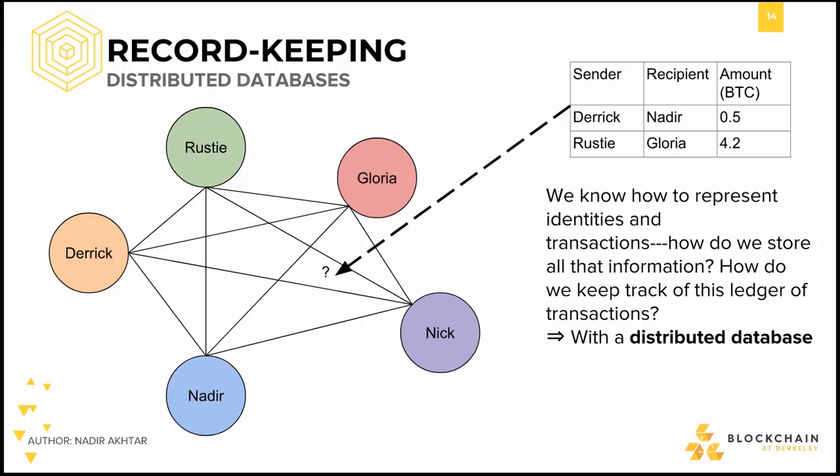As its name entails, information is stored in a distributed manner, meaning that the information is not stored by one entity or only in one location. Because Bitcoin aims to be decentralized, we want to use exactly that.